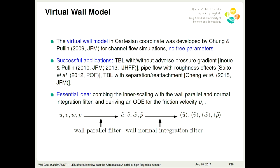The virtual wall model in Cartesian coordinate was developed by Choi and Moin for channel flow simulations. The most promising feature of this model is there's no free parameters, and this model has achieved many successful applications in canonical flows. For example, turbulent boundary layer flow with or without adverse pressure gradient, pipe flow with roughness effects that will also reproduce the Moody diagram very well, and turbulent boundary layer with or without separation and reattachment. It captures the separation bubble on the turbulent boundary layer. The essential idea of this model is combining the inner scaling with the wall-parallel and normal integration filter, and deriving an ODE for the friction velocity.